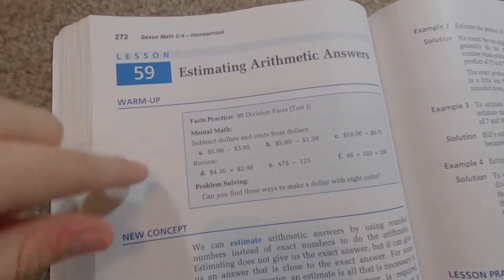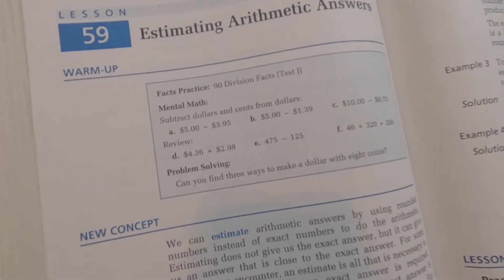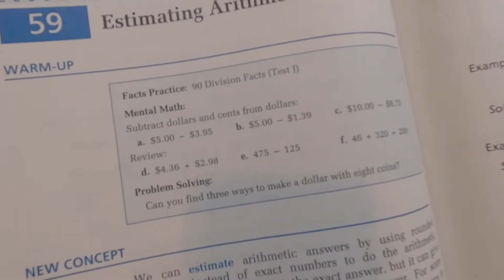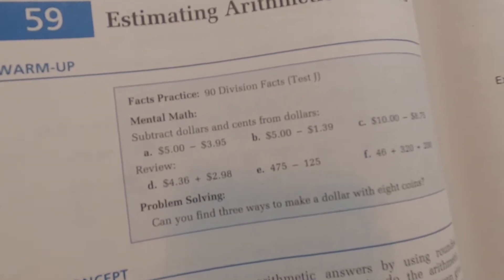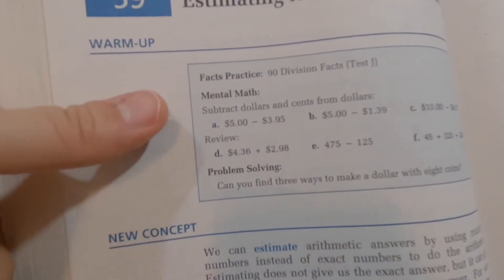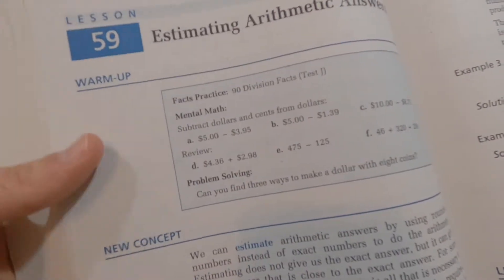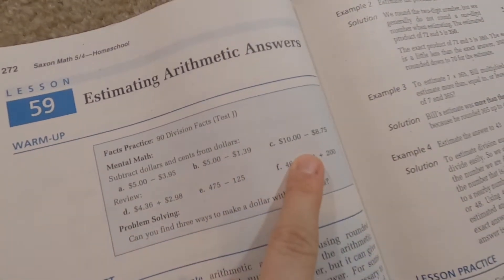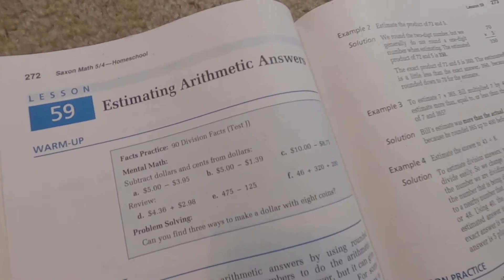All right. So here we are focusing on this warmup section and we have our mental math problems where we're focusing on dollars and adding and subtracting some unusual numbers by rounding and doing some little mind tricks, which they have taught in previous lessons. All right. So Isaiah, let's look at, let's do subtract the dollars and cents from dollars. $5 minus $3.95. $1.05. Good. $5 minus $1.39. $3.61. Very good. Now we're going with $10, so $10 minus $8.75. $1.25. There you go.